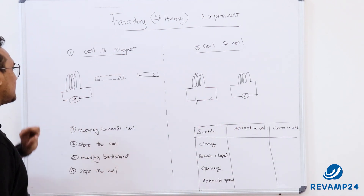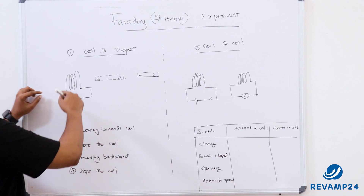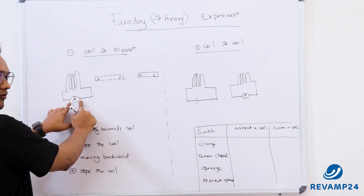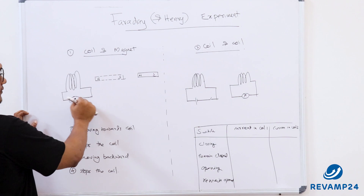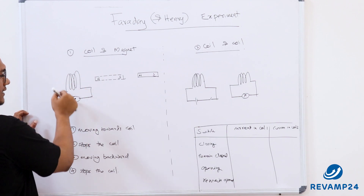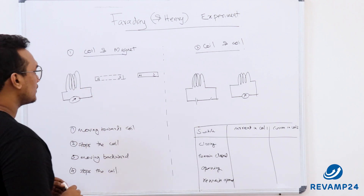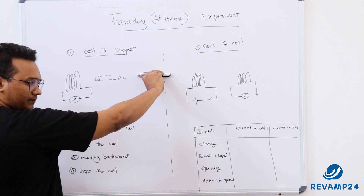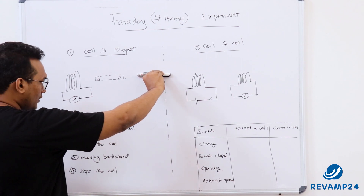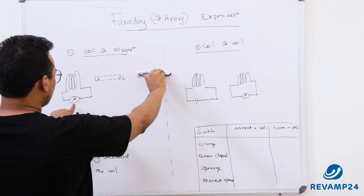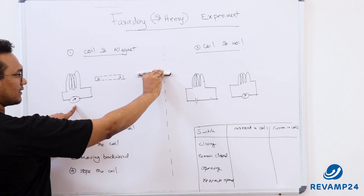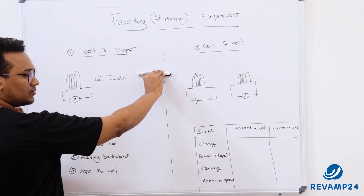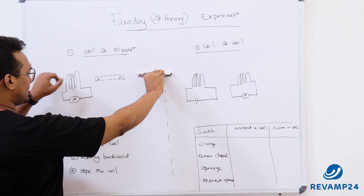In the first experiment, he took a coil connected across a galvanometer, forming a closed circuit. He kept a magnet nearby and measured the deflection — the deflection was zero, meaning there was no current passing through the circuit.